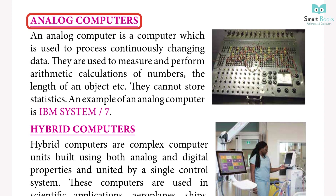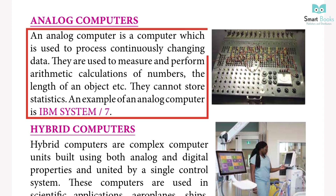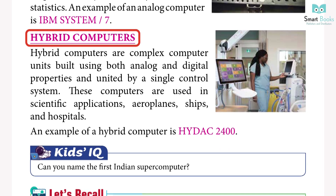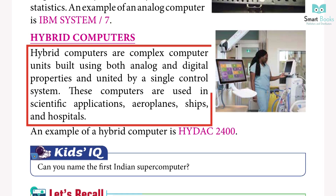Analog computers: an analog computer is used to process continuously changing data. They are used to measure and perform arithmetic calculations of numbers, the length of an object, etc. They cannot store static data. An example of an analog computer is the IBM System/7.